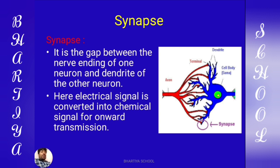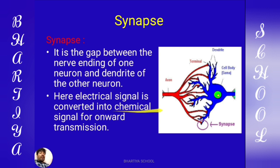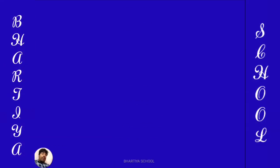Exon के terminal nerve endings और दूसरे neuron के cell body के short processes यानि dendrites — इन दोनों के बीच में जो gap junction है वो synapse है। तो define करना बिल्कुल easy है: nerve ending of one neuron और dendrite of another neuron के बीच में जो gap junction होता है उसे synapse कहते हैं। Synapse का सबसे important function है electrical impulse को chemical में convert करके transmission को एक neuron से दूसरे neuron में continue करवाना।